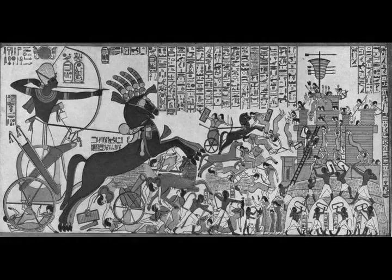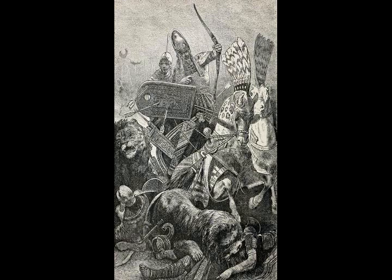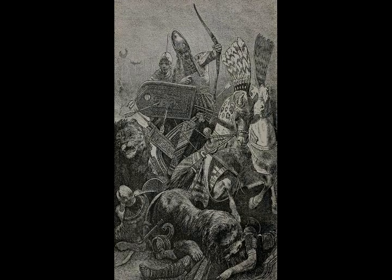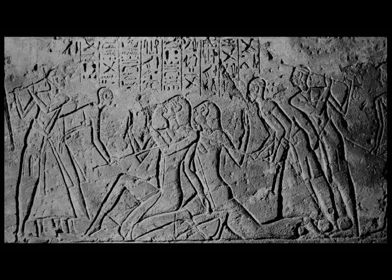Seti I took 20,000 men and reoccupied abandoned Egyptian posts and garrisoned cities. He made an informal peace with the Hittites, took control of coastal areas along the Mediterranean Sea, and continued to campaign in Canaan. A second campaign led to his capture of Kadesh and the Amuru Kingdom. His son and heir Ramesses II campaigned with him. There are historical records of a large weapons order by Ramesses II in the year before the expedition he led to Kadesh in his fifth regnal year.